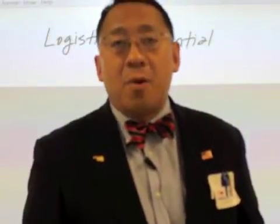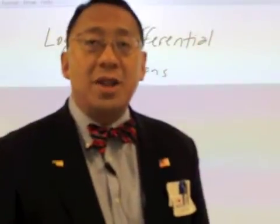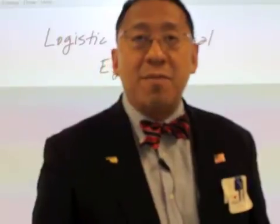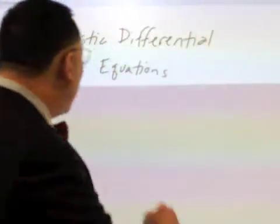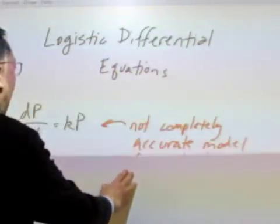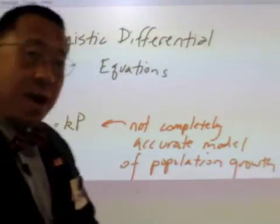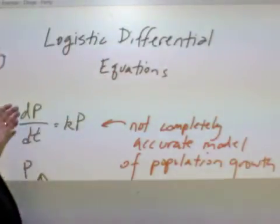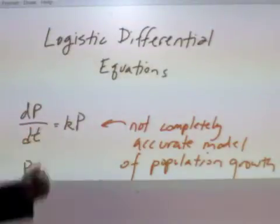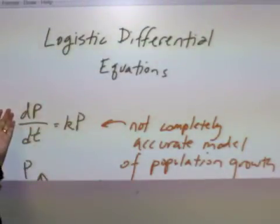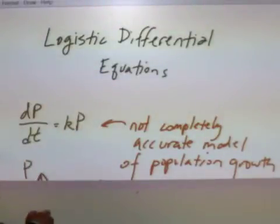And the more accurate model is described by what's called a logistic differential equation. Let's step back a little bit and remind ourselves what we did in lesson one. So in lesson one, we described the model that describes population was given as follows: dp/dt is equal to kp, meaning that the rate of change of population is proportional to the population. But this is not completely an accurate model of population growth.